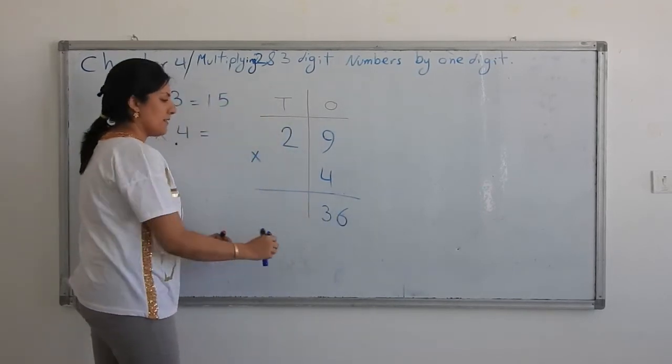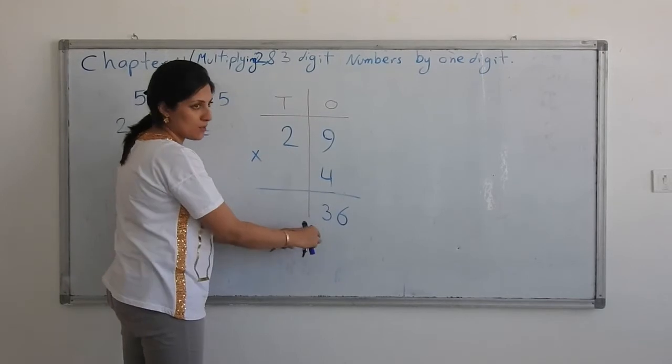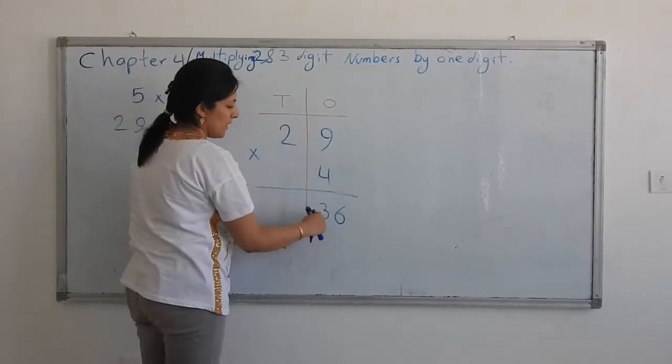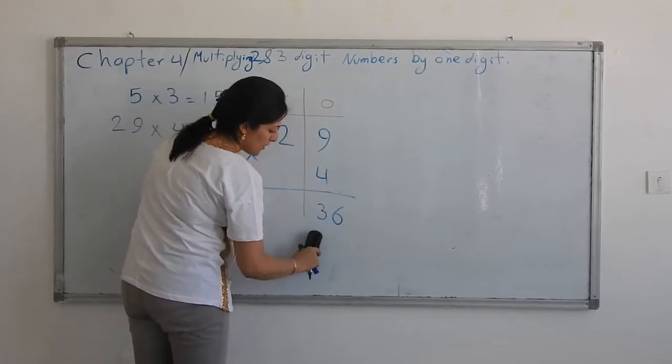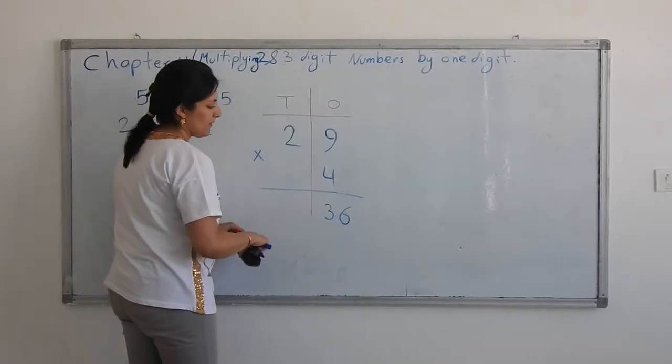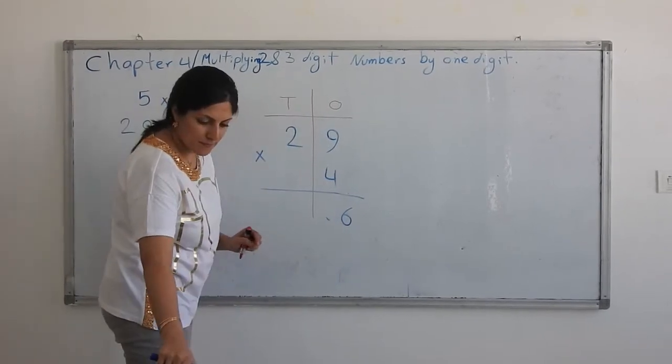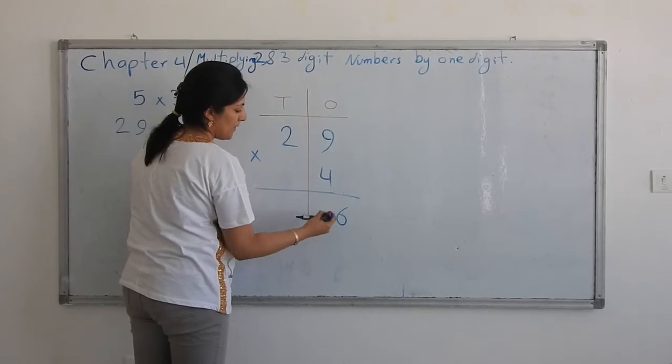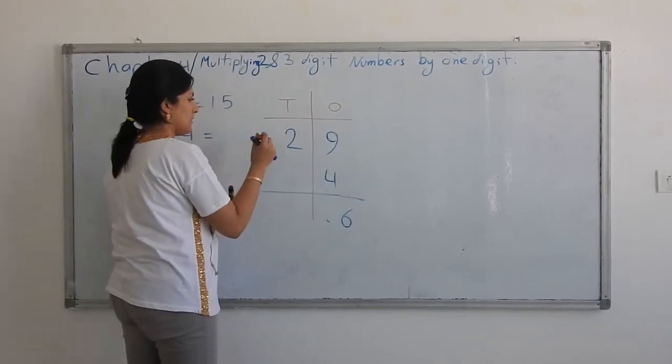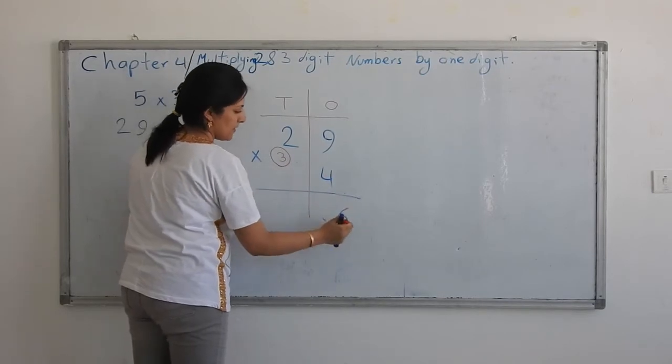But, I cannot write 36 all in 1s house because it is the 1s place. So, you should put down 6 and carry 3 to the top. So, 4 times 9 is 36. We can write it like that. 36.